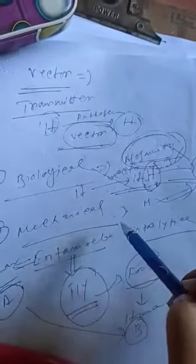The vector that can carry the pathogen or parasite and within which one part of the life cycle is completed is biological. Mechanical means it just carries, and biological means it carries plus the life cycle part is completed.